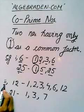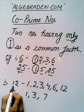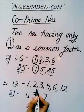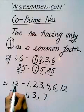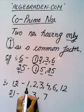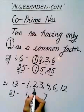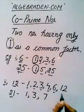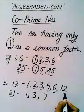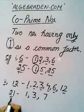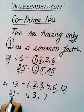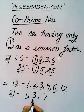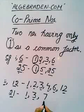In another example, number 12 and 21. Factors of number 12 are 1, 2, 3, 4, 6 and 12. Factors of number 21 are 1, 3 and 7.